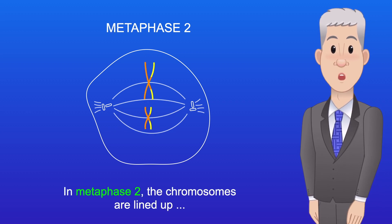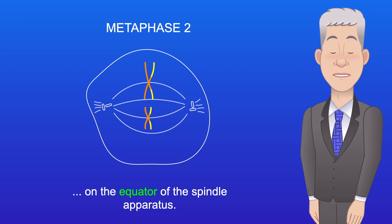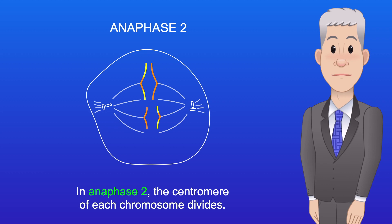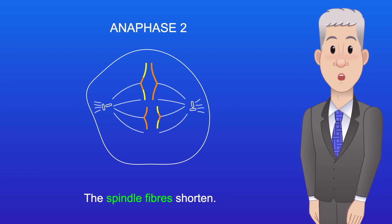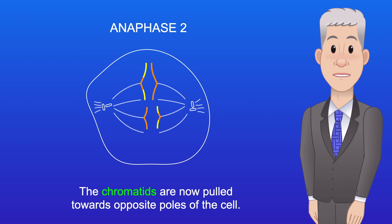In metaphase II, the chromosomes are lined up on the equator of the spindle apparatus. In anaphase II, the centromere of each chromosome divides and the spindle fibres shorten. The chromatids are now pulled towards opposite poles of the cell.